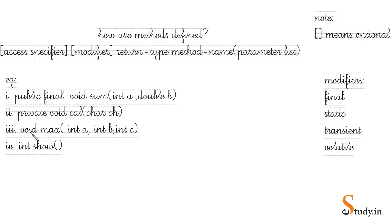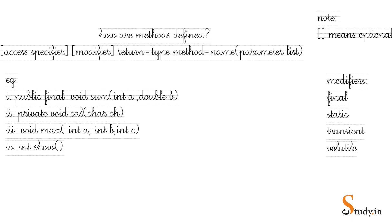In the third example: 'void max(int a, int b, int c)' — no access specifier or modifier, return type is void, method name is max, and three parameters. In the last example: 'int show()' — return type is int, method name is show, and no parameters. Some modifiers you should know: final, static, transient, and volatile.